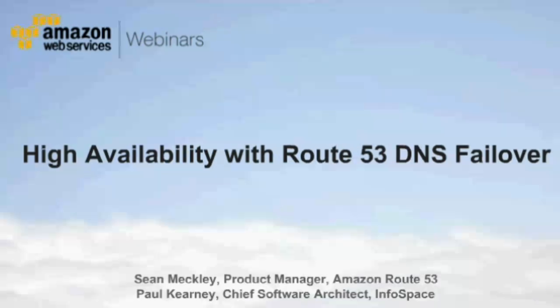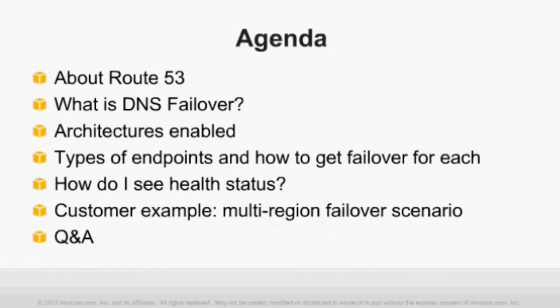Thank you. This is Sean Meckley, Product Manager for Amazon Route 53. Today we'll talk briefly about what Route 53 is for those new to the service, then walk through what DNS Failover is and how it functions. We'll cover high-availability architectures enabled by DNS Failover, different types of endpoints, how to view health status, and then Paul Kearney from Infospace will walk through how his team uses DNS Failover for multi-region applications on AWS. At the end we'll have Q&A.